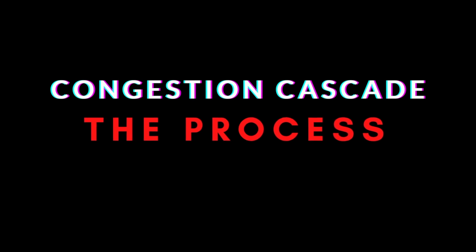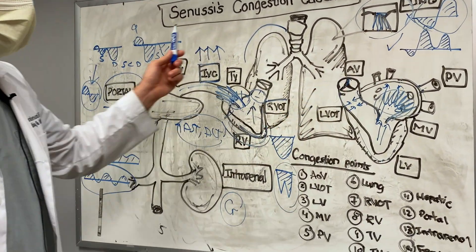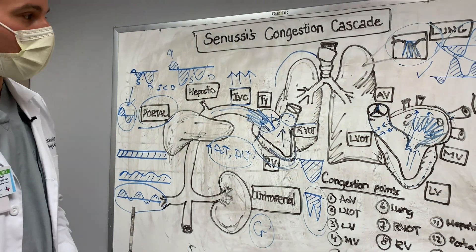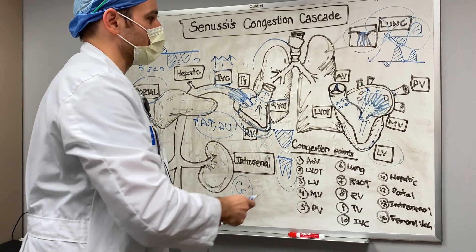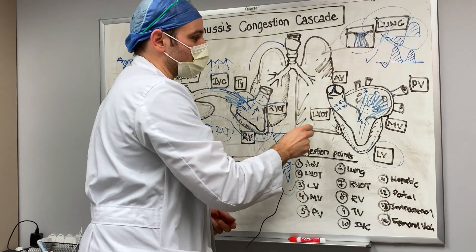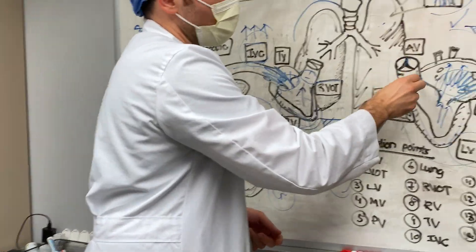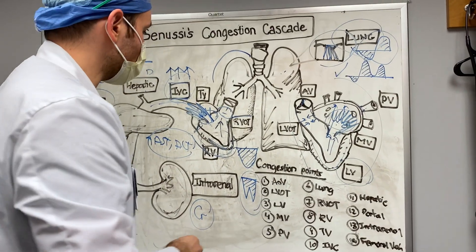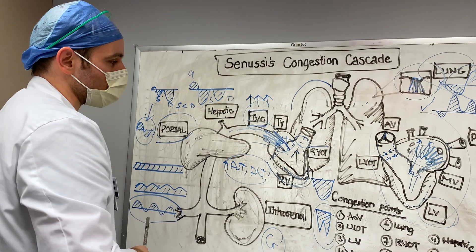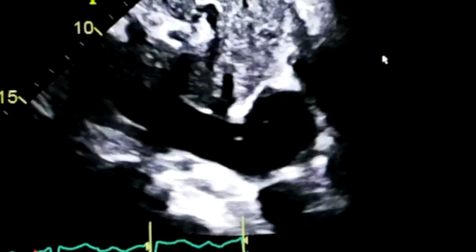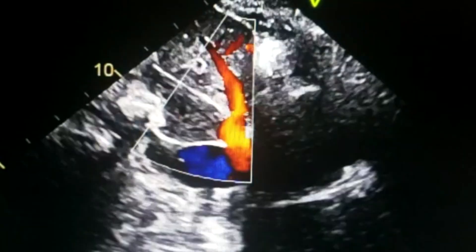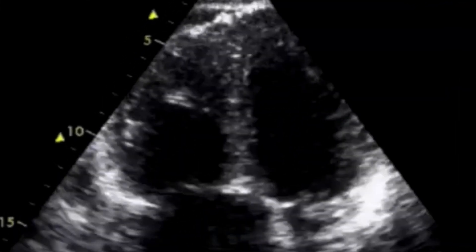Volume status is assessed by looking at congestion in specific organs. You don't need to examine every congestion point every time, but select high-yield examinations. For example, if lungs look normal and there's no significant aortic stenosis, but you see a large IVC and hepatic flow reversal, then dive into congestion points proximal to those findings — look at the tricuspid valve, the RV, and the RVOT.